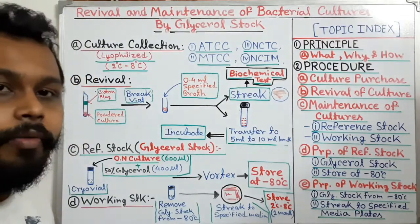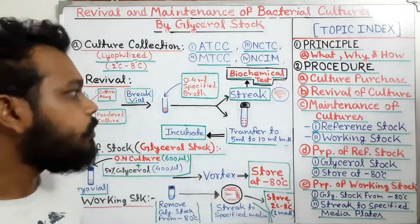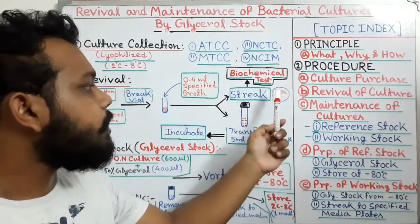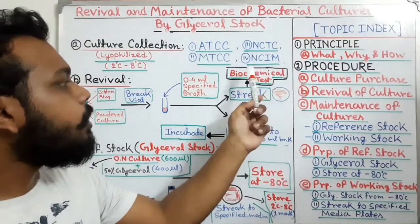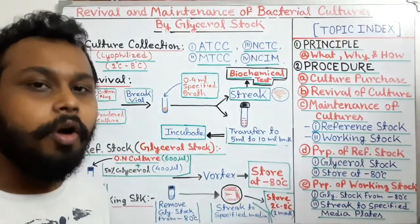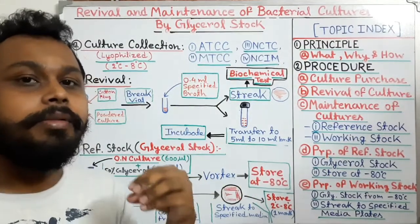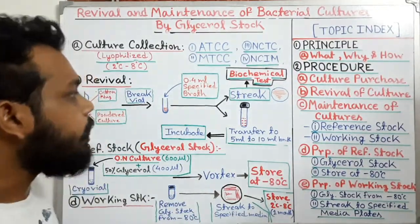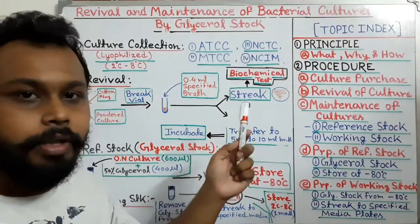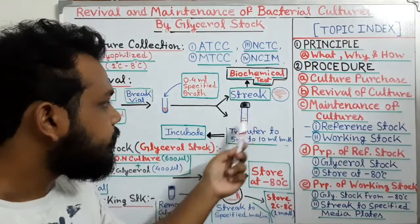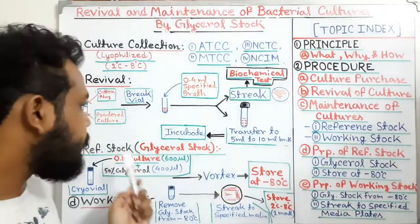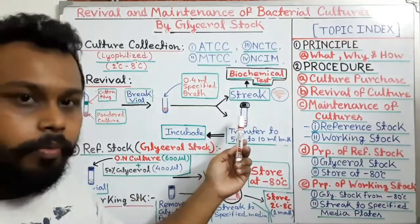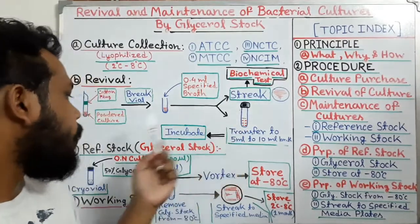We incubate both — the solid media plate and the broth — at the specified temperature for a specified time, as mentioned in the manual. After incubation, we take the pure colonies obtained by streaking for biochemical confirmation — to check whether the particular biochemical characteristics are present in that bacterial culture. The broth culture is used to prepare the reference stock.